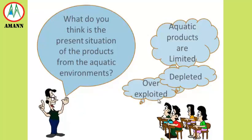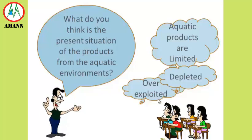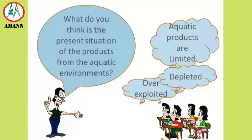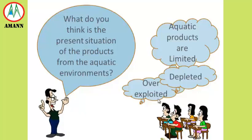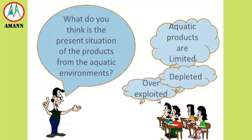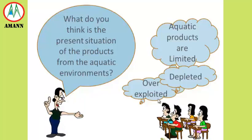The potential to harvest more products from aquatic environments is now very much limited. Production is decreasing as more and more fisheries are getting heavily or overexploited. The world's traditional species were fully exploited, overexploited, depleted, or in the process of rebuilding due to depletion.